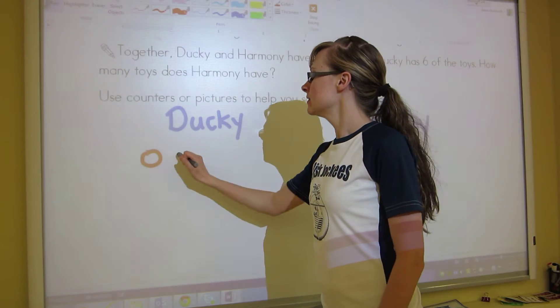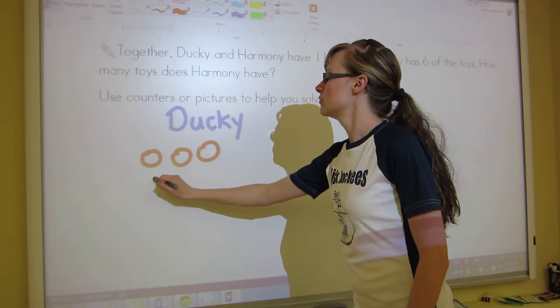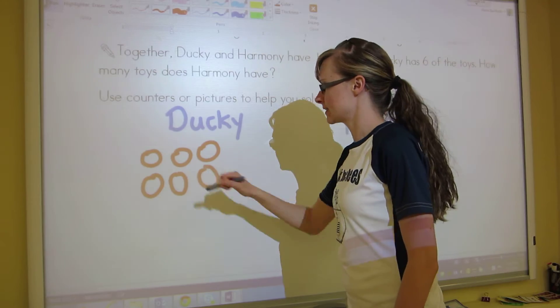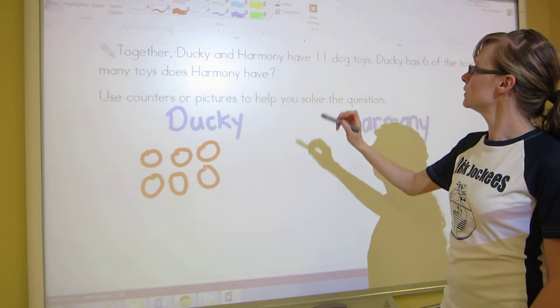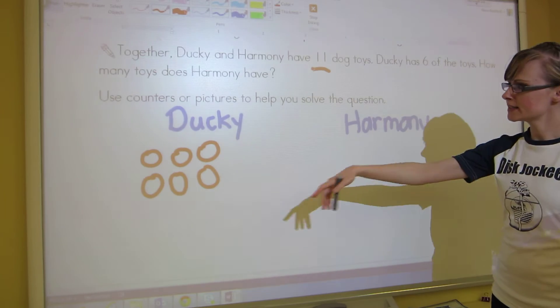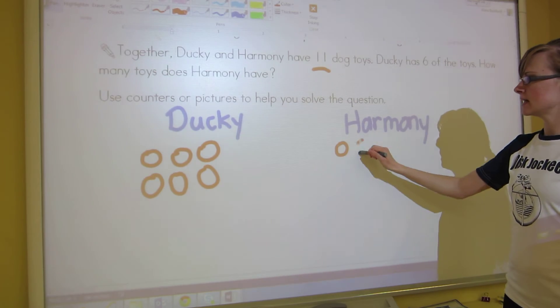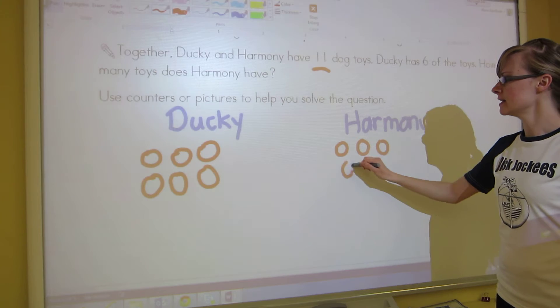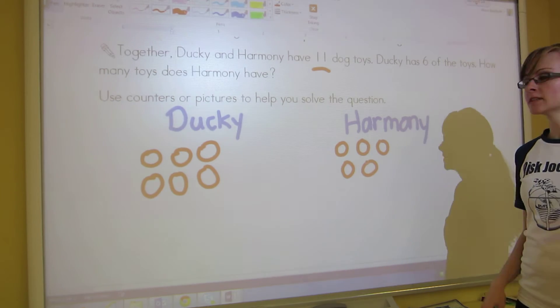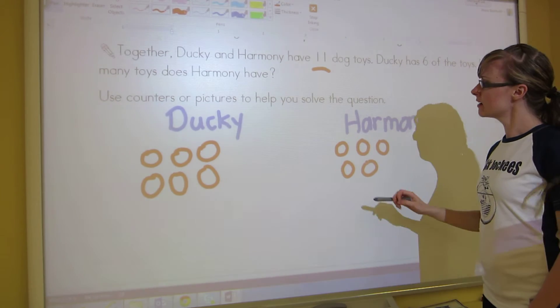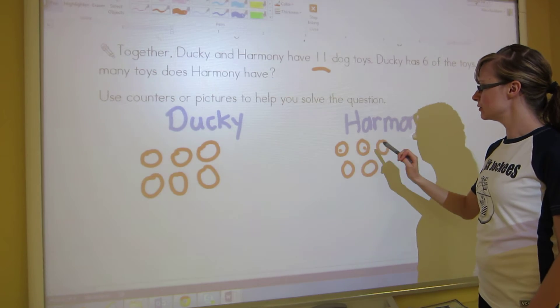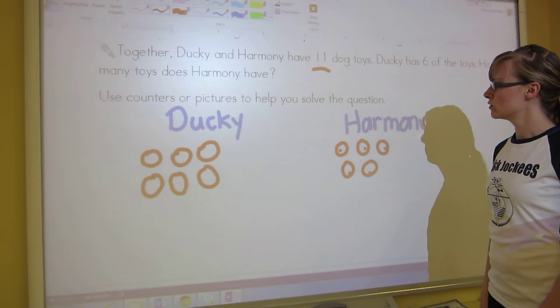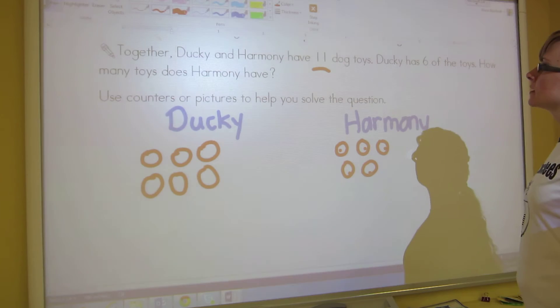We've got 1, 2, 3, 4, 5, 6. Those are Ducky's toys. Now we need to get to 11 though. We've got 6 there, 7, 8, 9, 10, 11. You can see right there that Harmony must have 1, 2, 3, 4, 5. 5 dog toys.